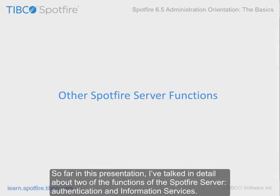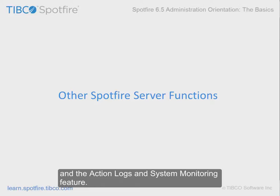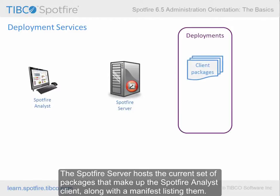So far in this presentation, I've talked in detail about two of the functions of the Spotfire server: authentication and information services. I'll now briefly discuss the other functions I mentioned earlier — deployment services, the Spotfire library, and the action logs and system monitoring feature. The deployment services function helps administrators keep Spotfire Analyst clients up to date. The Spotfire server hosts the current set of packages that make up the Spotfire Analyst client, along with a manifest listing them.